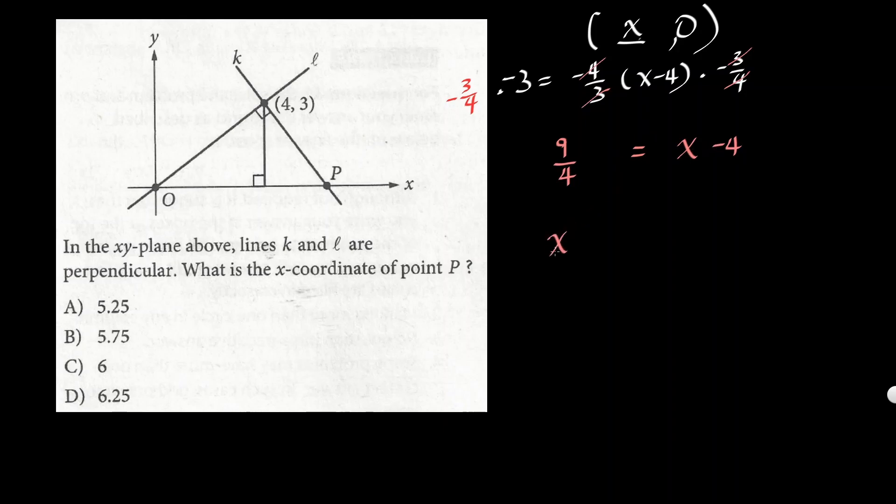So x equals 9/4 plus 4, which equals—let me see, 4 is 16/4—so x should be 25/4. What is that? That's 6.25. So the answer should be D.